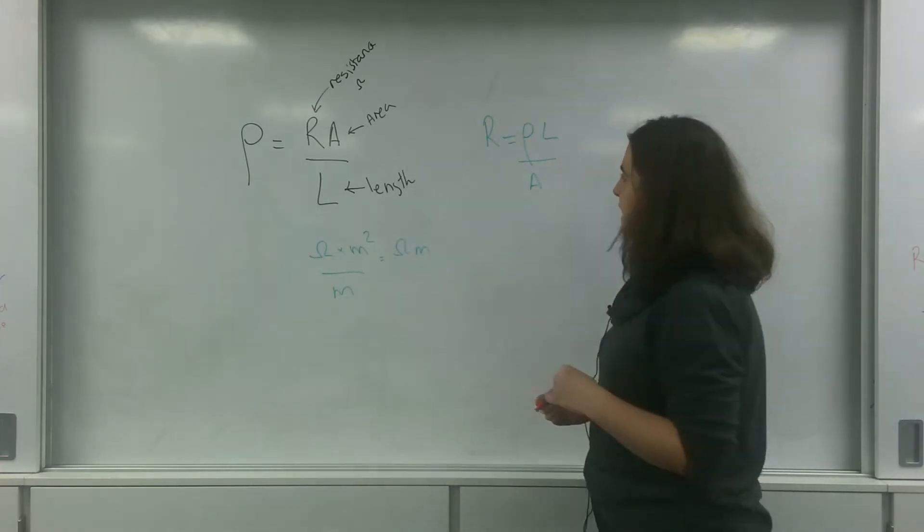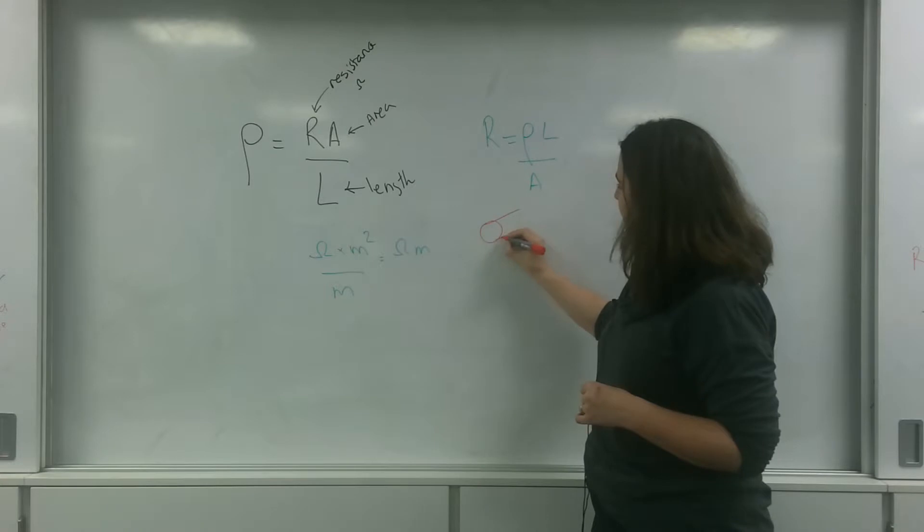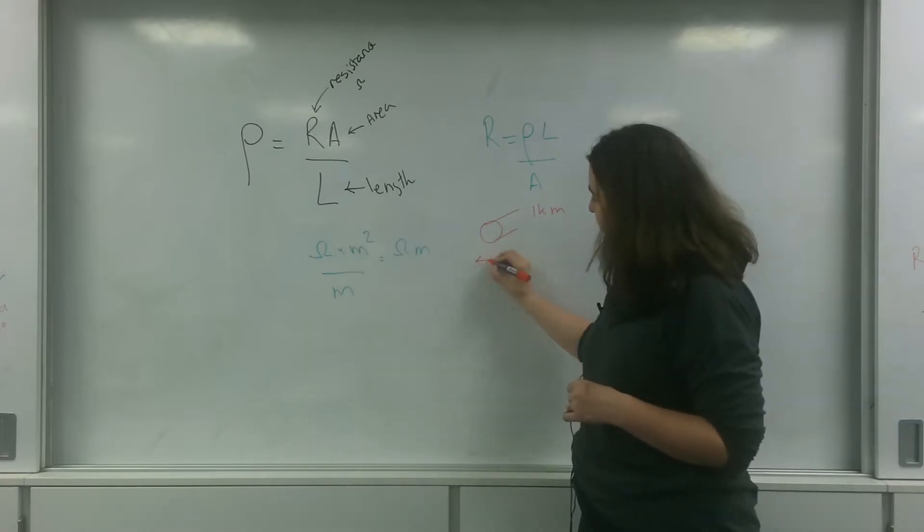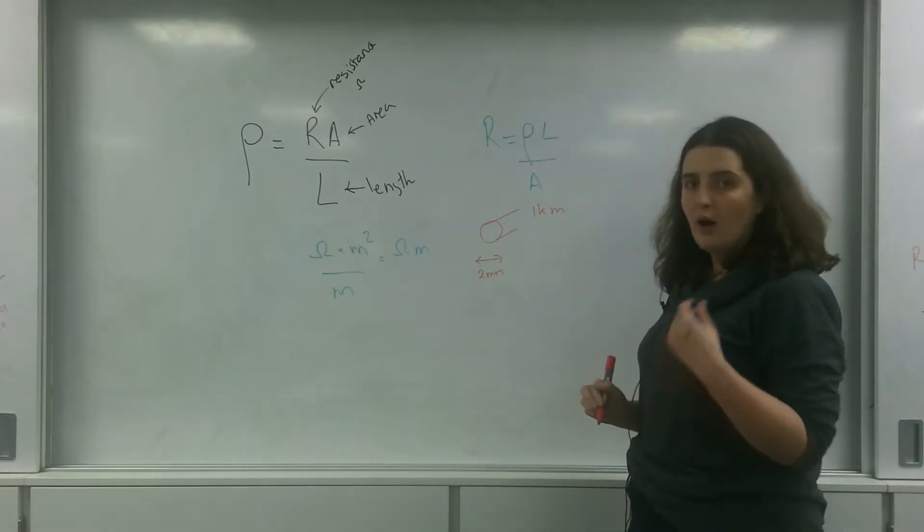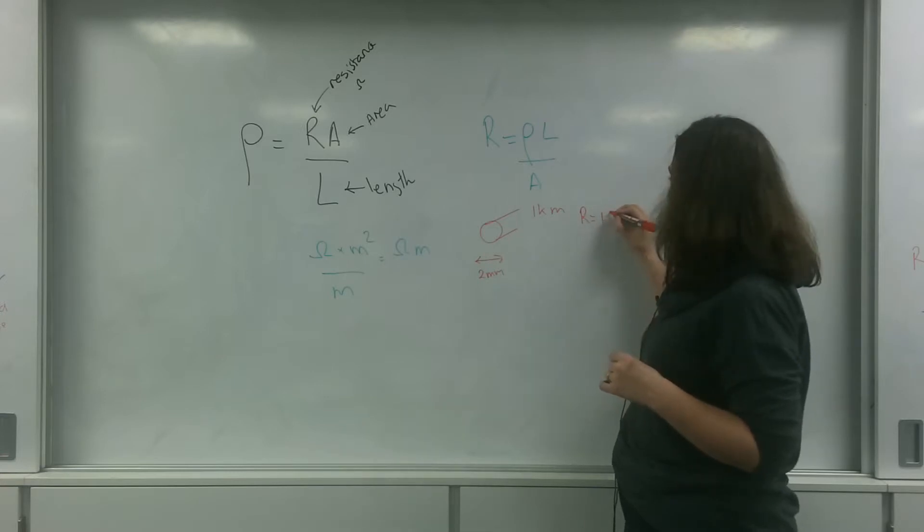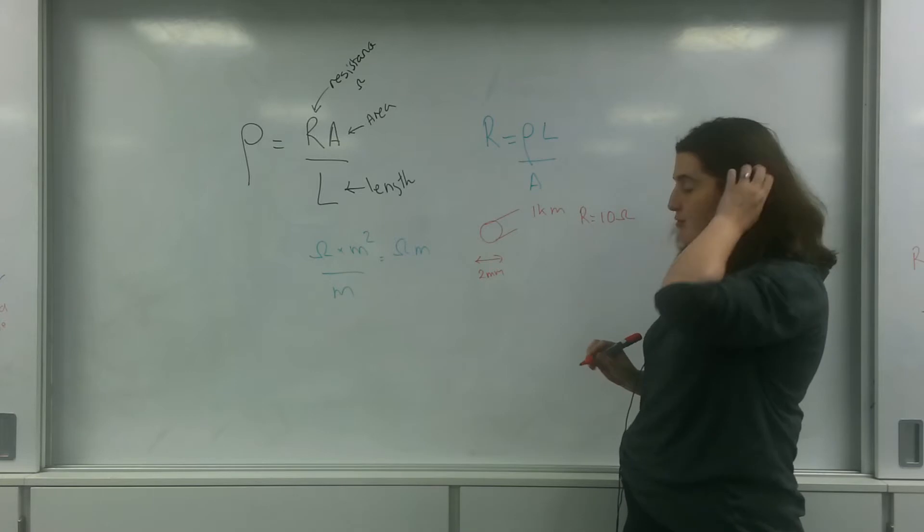So let's give you an example. I have a wire which is one kilometer long and has a cross-sectional area of two millimeters. I measured the resistance of this to be 10 ohms. What is my resistivity?